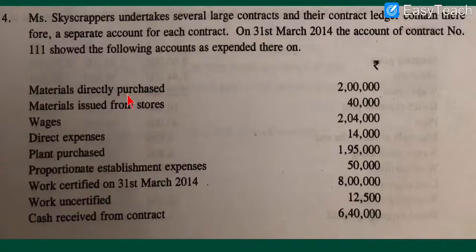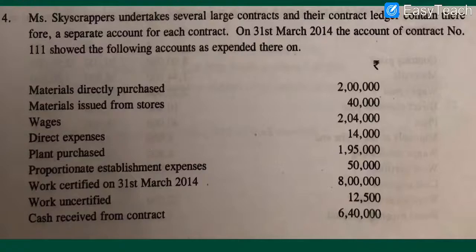Material directly purchased: 2 lakh rupees. Material issued from stores: 40,000. Plant wages: 2 lakh 40,000. Direct expense: 14,000. Plant purchased: 1 lakh 95,000. Proportionate establishment expenses: 50,000.